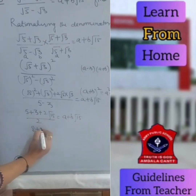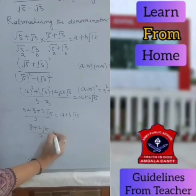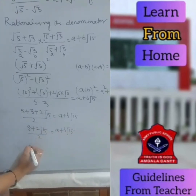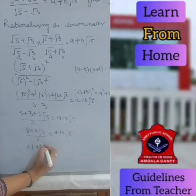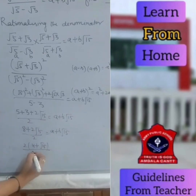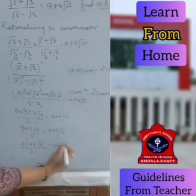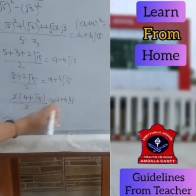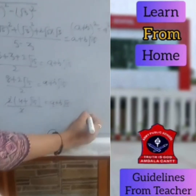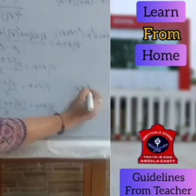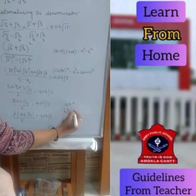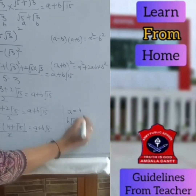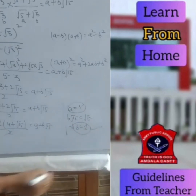So it will be 8 plus 2 root 15 upon 2 equals A plus B root 15. The 2s cancel, giving 4 plus root 15 equals A plus B root 15. This implies A plus B equals 1, so the value of A is 4 and the value of B is 1.